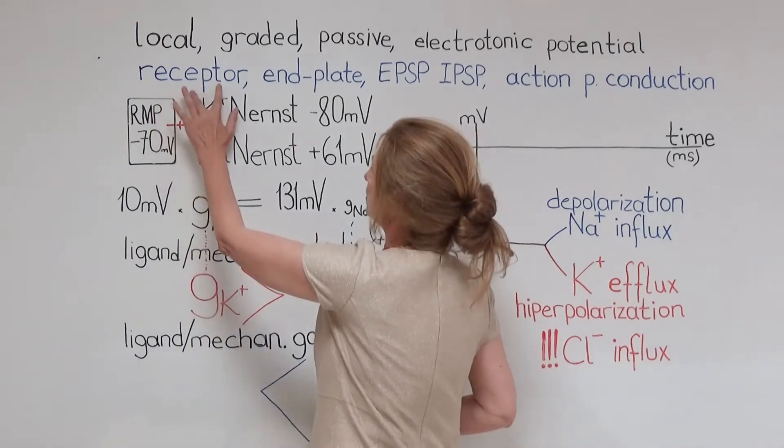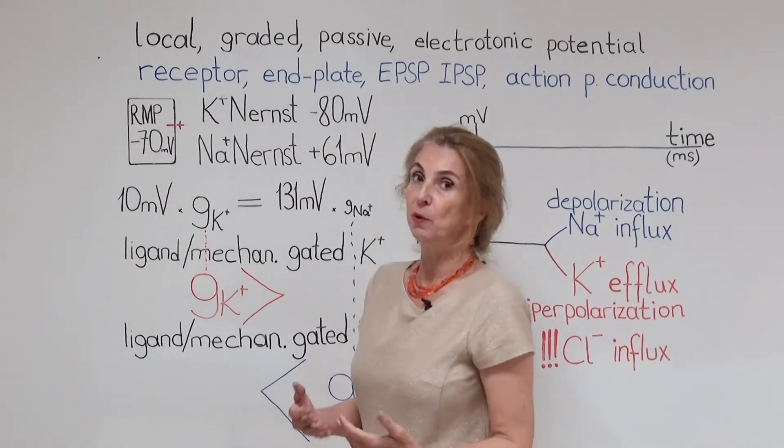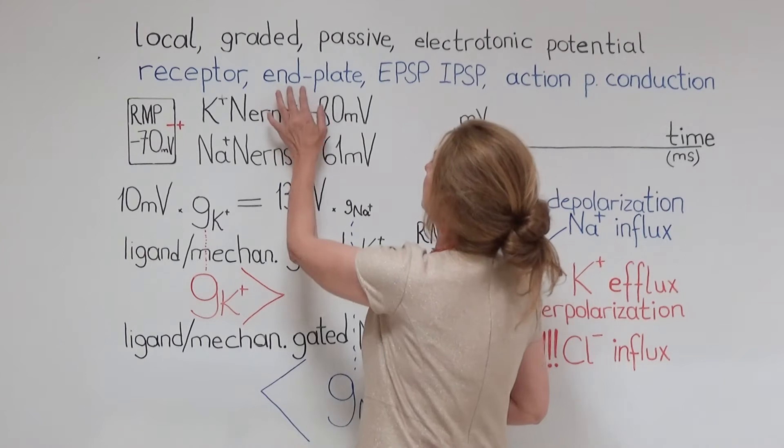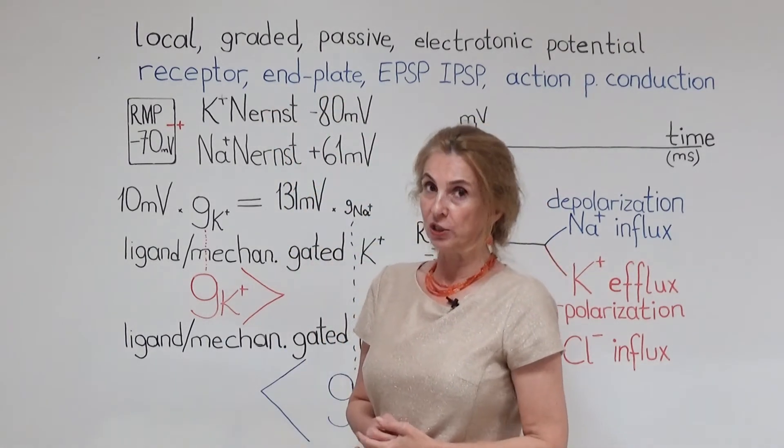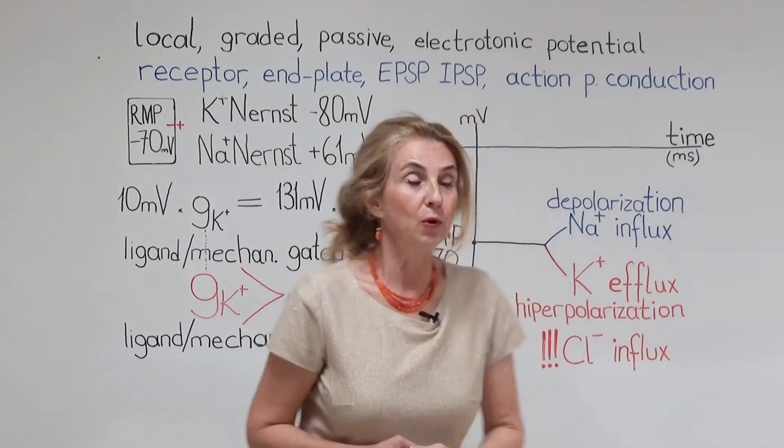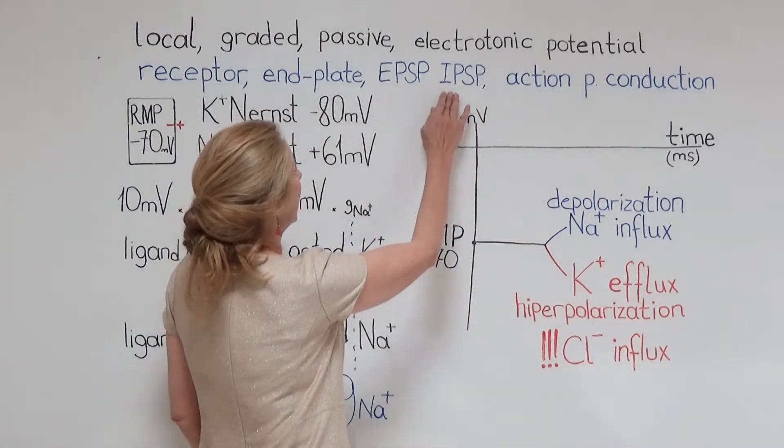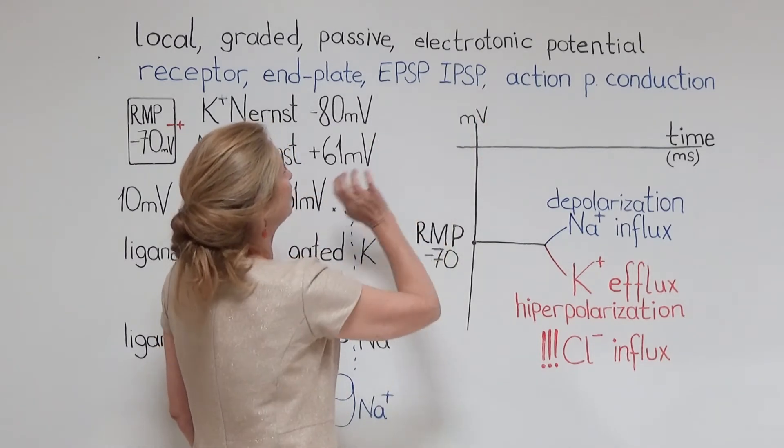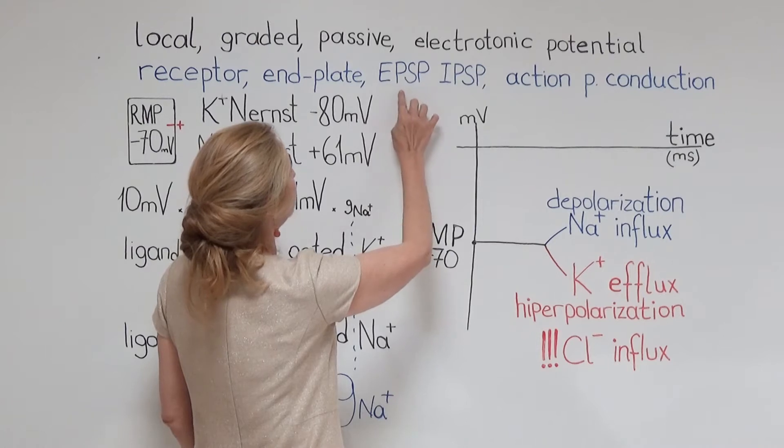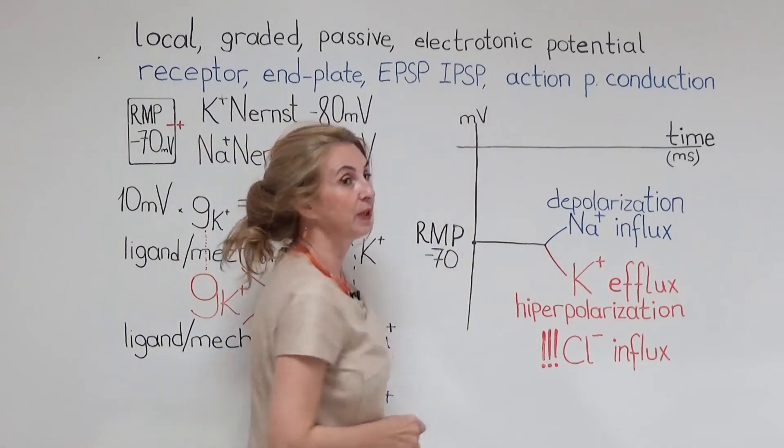The receptor potentials that form at our sensory neurons are one type of local potential. The end plate potential that is formed at the neuromuscular junction is another type of local potential. At the neuronal synapse, in the postsynaptic neuron, some local potentials are formed. They are called excitatory postsynaptic potentials or inhibitory postsynaptic potentials.